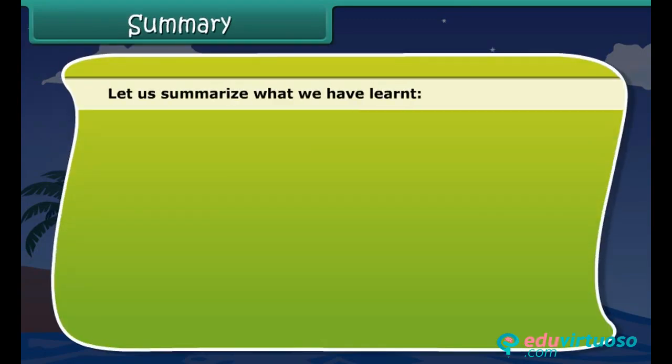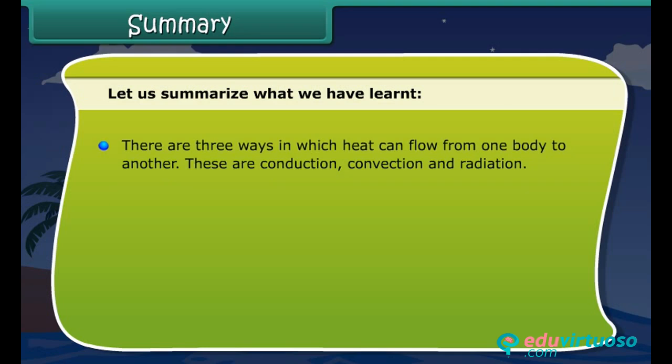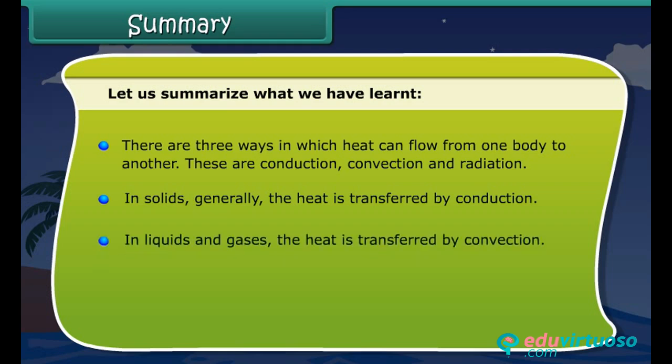Let us summarize what we have learnt. There are three ways in which heat can flow from one body to another — these are conduction, convection and radiation. In solids, generally the heat is transferred by conduction. In liquids and gases, the heat is transferred by convection. No medium is required for transfer of heat by radiation.